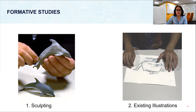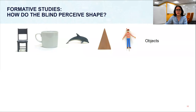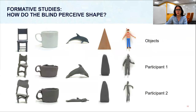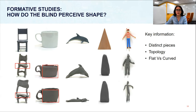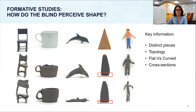Our decision on the algorithm is largely based on two formative studies we ran. We first tried to understand how the blind perceive shapes. We used five objects and gave clay to two participants and asked them to replicate the objects. Some information seemed more important: objects are made of distinct pieces connected following the skeleton — for example, all chairs have four legs and four connectors. Second, there is a distinction between flat and curved surfaces, such as the flat seat of a chair versus the curved container of a coffee cup. Third, participants recognized cross-sections and in simpler cases replicated them, such as the pyramid with a square cross-section.